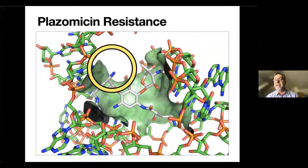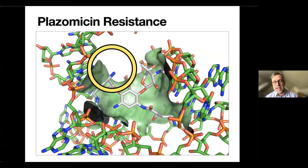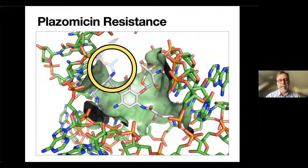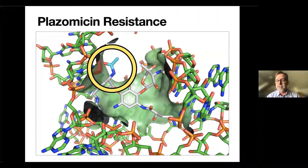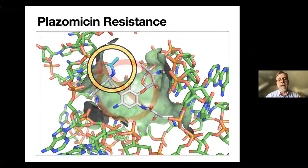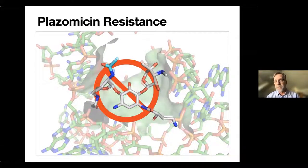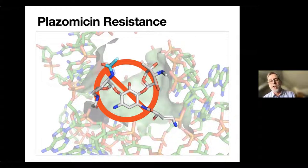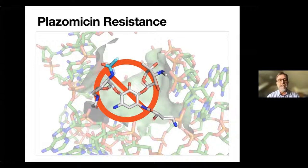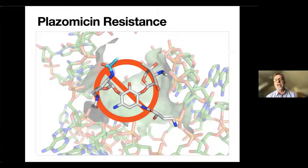Here is plazomicin, again, bound to the ribosome, and once it sits there, that's just fine. But what happens if your bacteria has this enzyme? It will instead bind to this version of the antibiotic, and actually, it does not bind to the ribosome anymore. So that is what causes resistance. Just this small chemical change causes this antibiotic from not working anymore. We have now figured out exactly how it binds to the ribosome and how it stops binding.